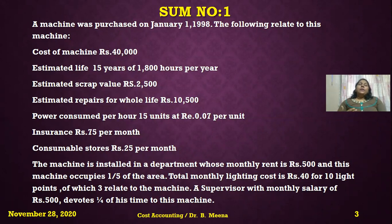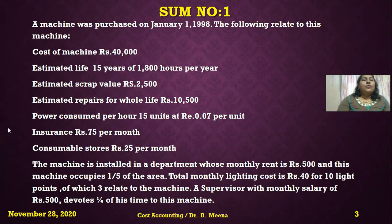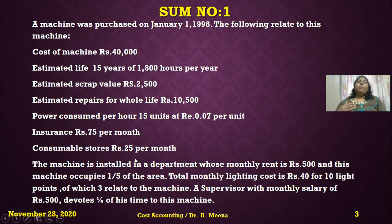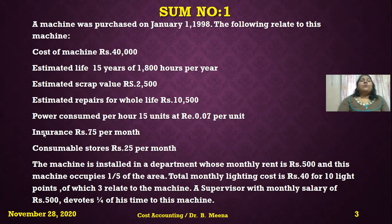Now we handle the standing charges — insurance, consumable stores, and similar items. We need to identify all expenses that fall under standing charges. Since these are given on a monthly basis, we must first convert them to per annum, then divide by 1,800 hours, because that is how many hours the machine runs per year.